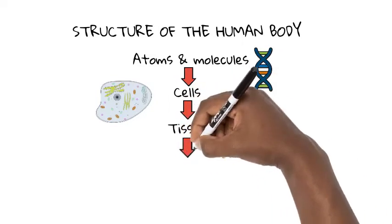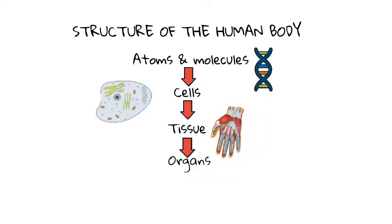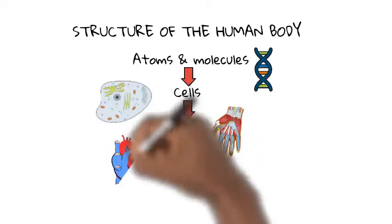Fourth, there are organs. This is where tissue comes together to form organs, which perform specific functions such as the heart and the brain.